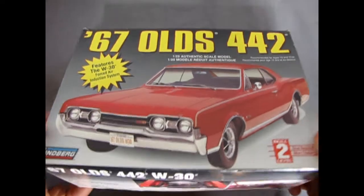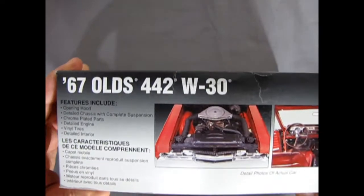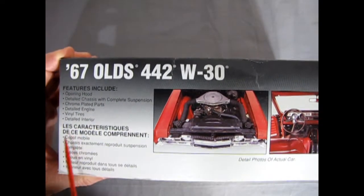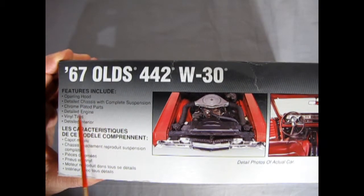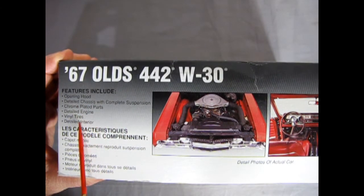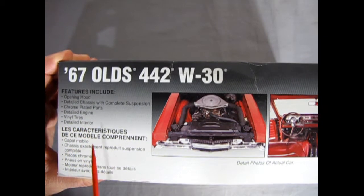So, looking at the side of the box here, we of course have the 67 Olds, opening hood, detailed chassis with complete suspension, chrome plated parts, detailed engine, vinyl tires, and a detailed interior.